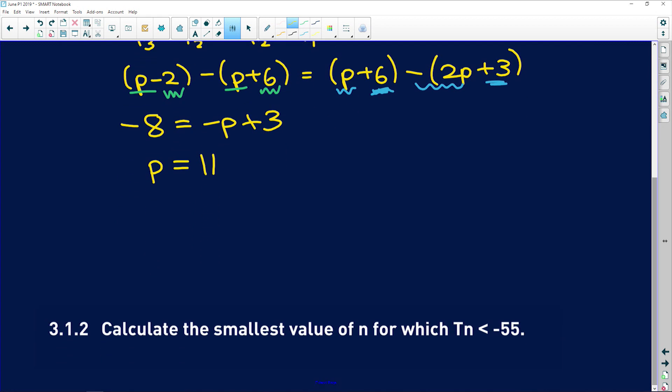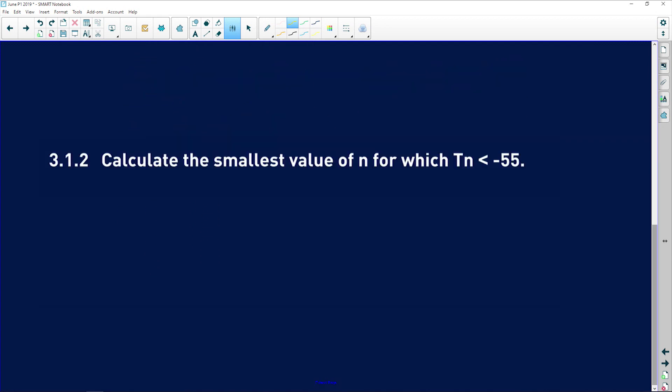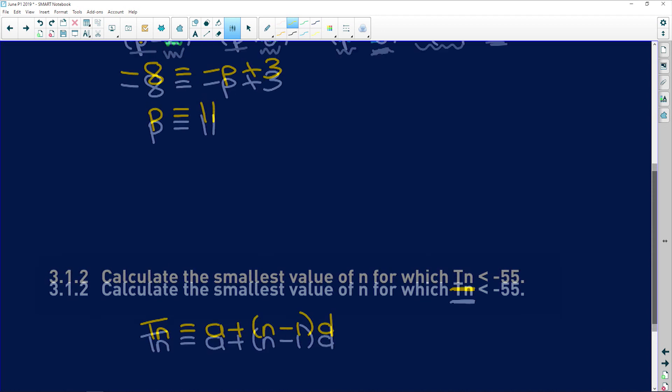3.1.2 says calculate the smallest value of n for which tn is less than negative 55. Obviously we're going to have to find the general formula first. Remember, tn equals a plus (n minus 1)d. But we don't even know what our sequence is yet.